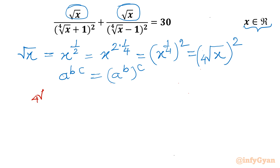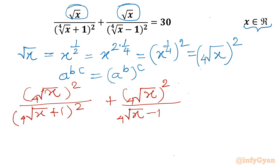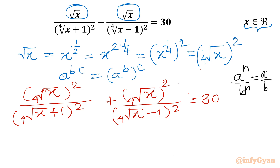So I will replace our numerators by writing the fourth root of x, whole square. Let's rewrite our equation: fourth root of x whole square divided by fourth root of x plus one whole square, plus fourth root of x whole square divided by fourth root of x minus one whole square, equal to 30. Now we will use the exponent property: a^n over b^n equals (a/b)^n.